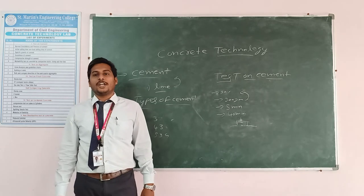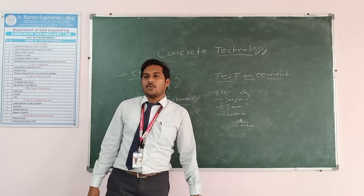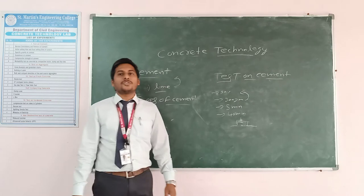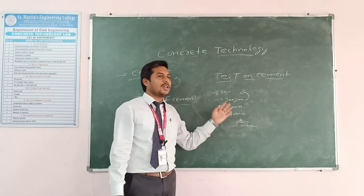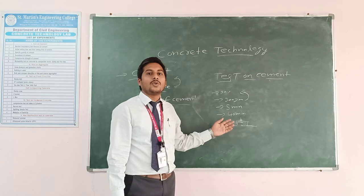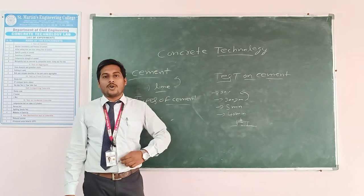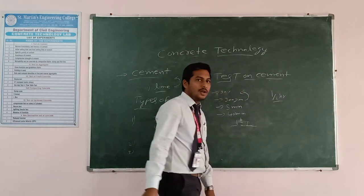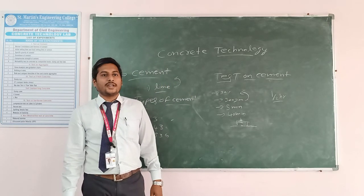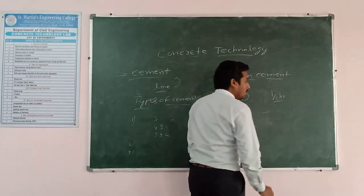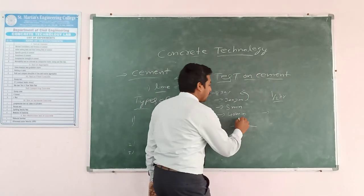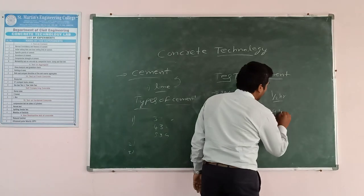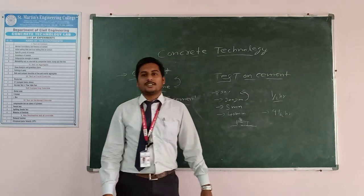For the final setting time, we have to change the needle. The needle at the bottom has a 5 mm by 7 mm attachment. The same procedure is used for final setting time, but we take a reading every half hour. When the needle just touches the surface of the cement, that is the final setting time. Approximately we will get nine and a half hours. Thank you everyone.